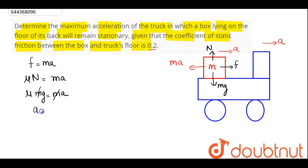M, N and M cancels out. Hence, acceleration comes as mu into G. Hence, mu value is given as 0.2 and value of G is 10. Hence, we can say acceleration of the truck can be 2 meter per second square, such that this box will remain stationary on the truck. This is our answer.